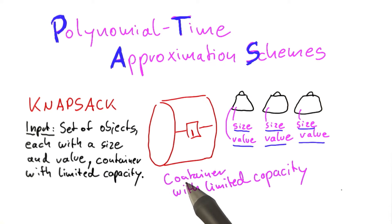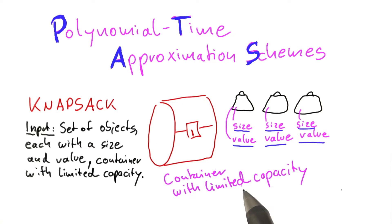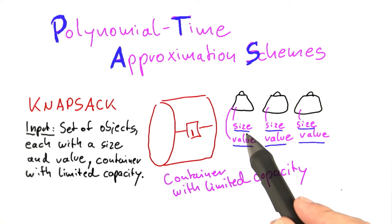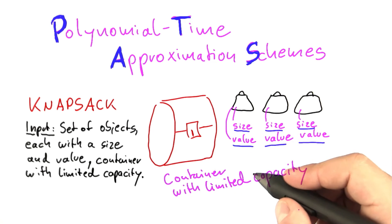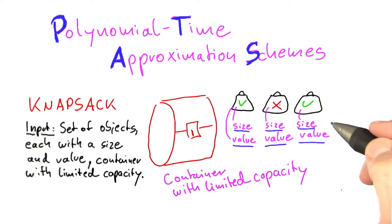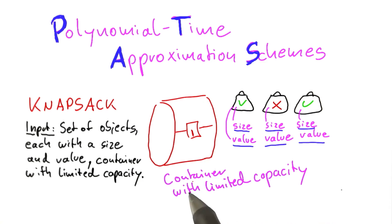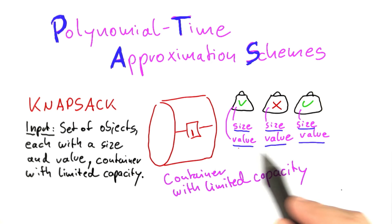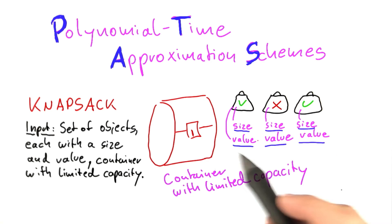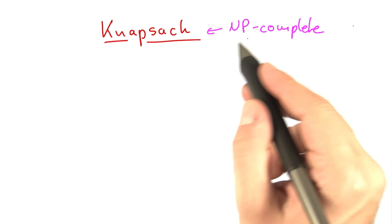The question you're trying to answer with Knapsack is very simple: what is the maximum value that I can put into this bag while observing the limited capacity? So the total sum of the sizes of the objects that I select to be in the knapsack cannot exceed the capacity of the container. Among all possibilities of putting objects into the container without exceeding maximum capacity, you want the best possible value — calculated as the sum of the selected objects' values. Knapsack is known to be NP-complete.